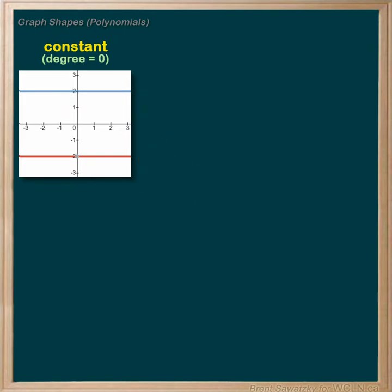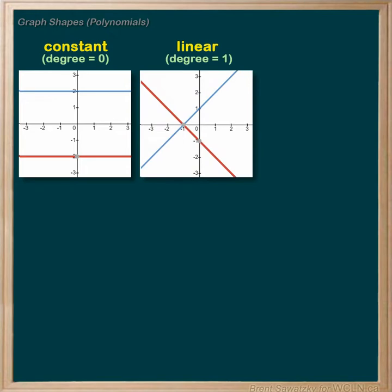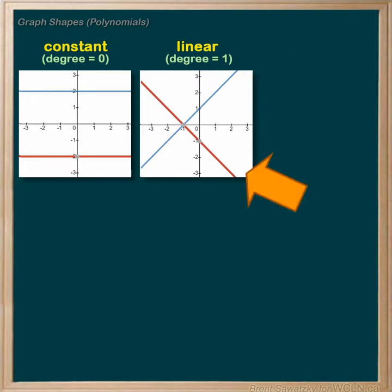Next, we move up to a degree of one, and we call this the linear relationship. And it looks like this. A positive slope in blue and a negative in red. Again, the red is just reflected vertically.